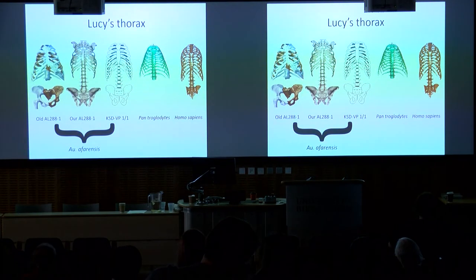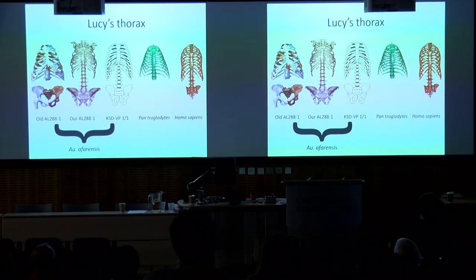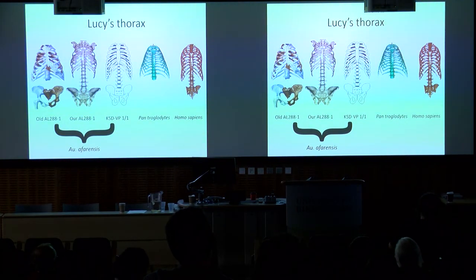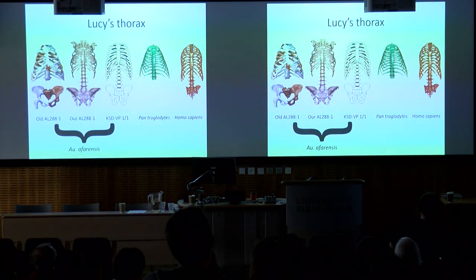This is what her thorax now looks like. The conventional Peter Schmidt/Lovejoy reconstruction had it very funnel-shaped, more like a chimpanzee. New reconstructions of another afarensis individual known as Kadanuumuu — 'big man,' about 50 centimeters taller than Lucy — show a much more modern human bell shape. Our Lucy reconstruction is slightly more barrel-shaped but approaching bell shape, which we think is probably related to her smaller size.